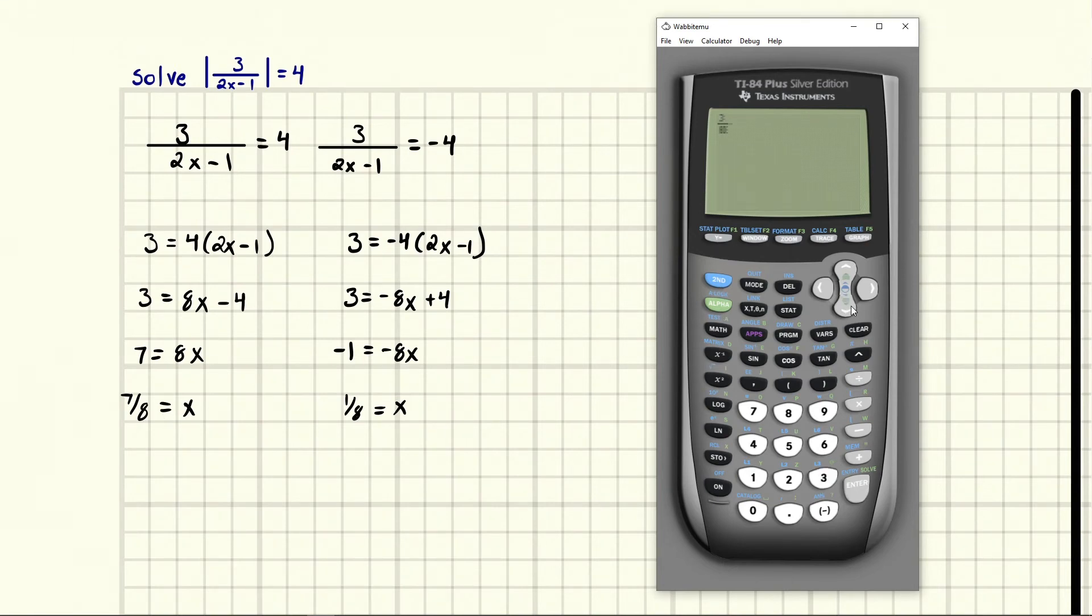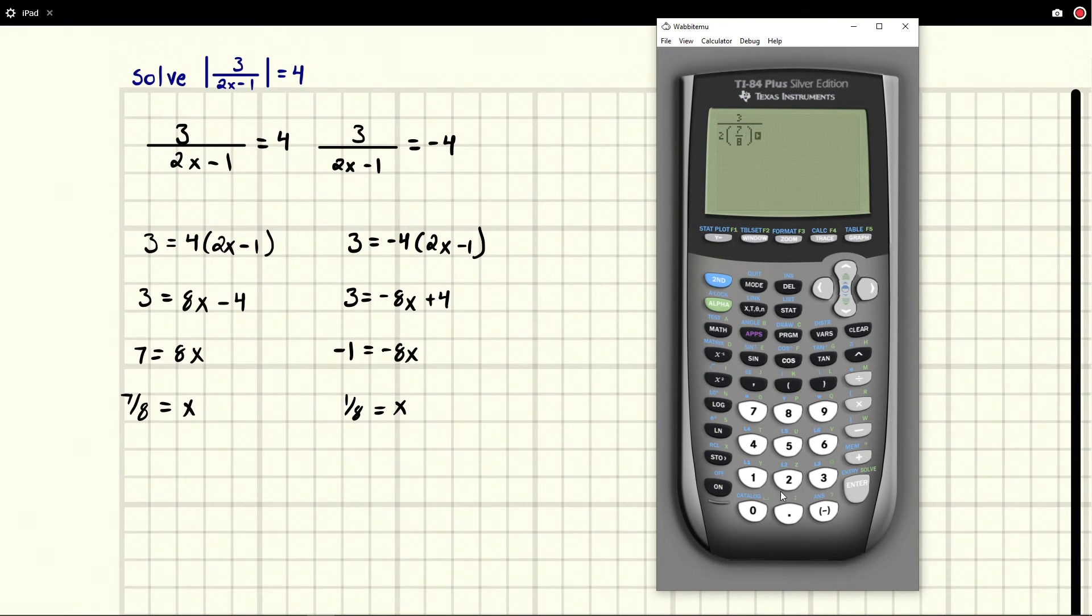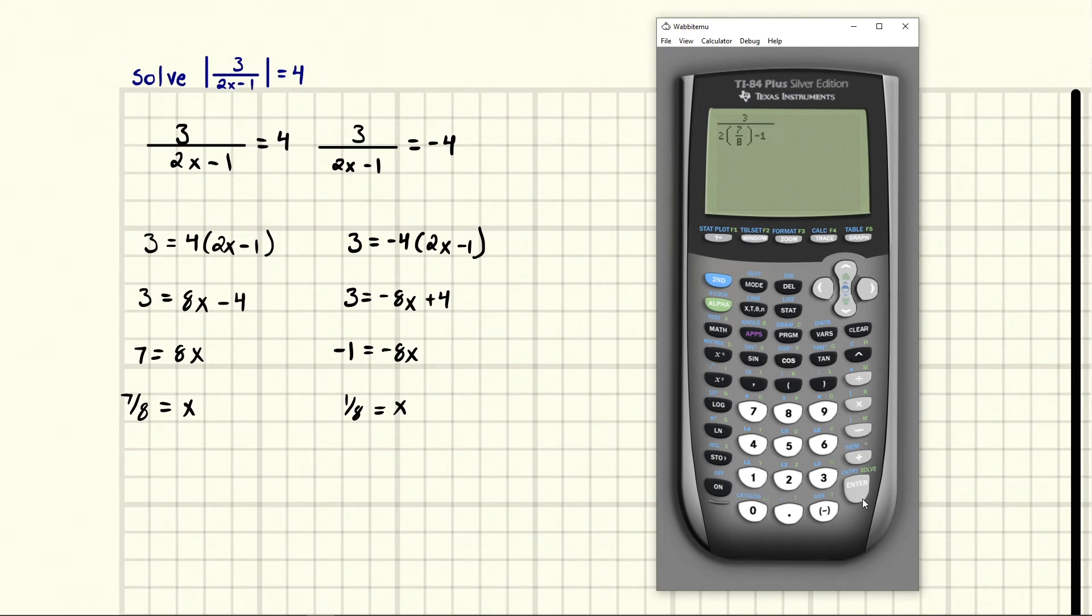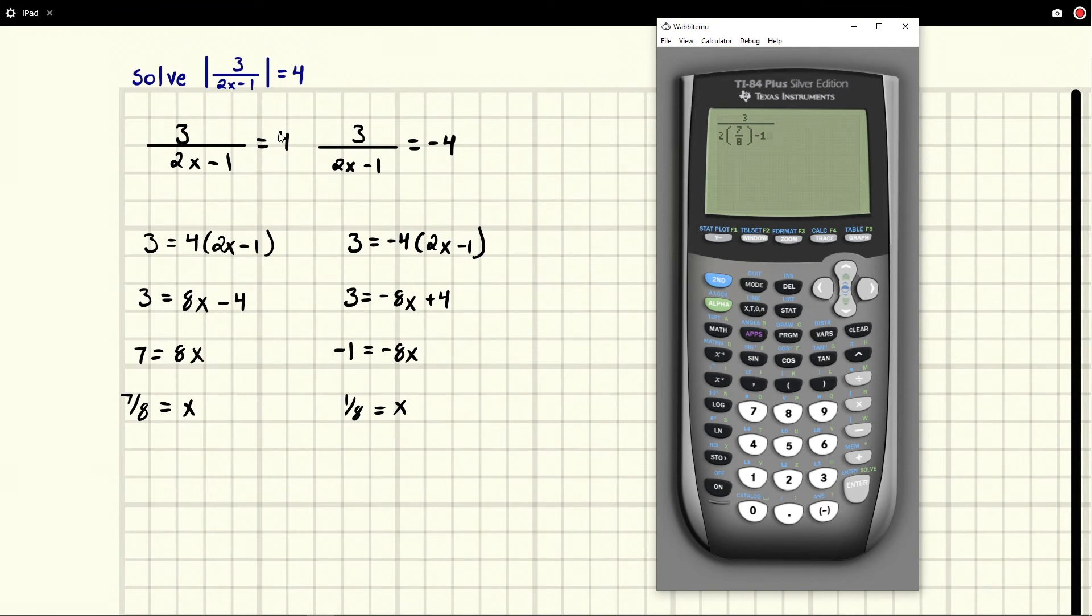I'm going to get 3 over 2 times, and it's another fraction, this one is 7 over 8 for our first one. We're going to close parenthesis and then we're going to do minus 1. If we did this right we would expect to get positive 4 out. And we do, and we know that 4 equals 4 so this one checks.